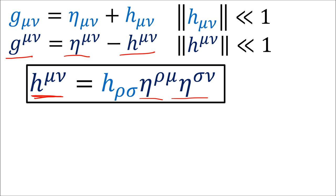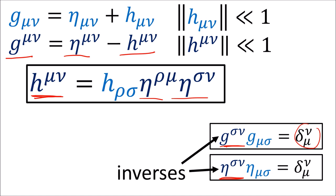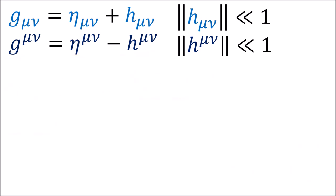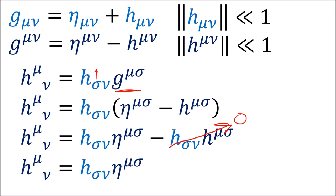It's important to remember that the metrics g and eta with upper indices are actually the inverse metrics and sum to give a Kronecker delta. But h with upper indices is not the inverse of h. Instead, h with upper indices is h with indices that have been raised with metric tensors. Normally we would raise indices with the g metric, but since h is small, the product of two h's goes to zero, so we can raise the indices of h using the eta metric only.